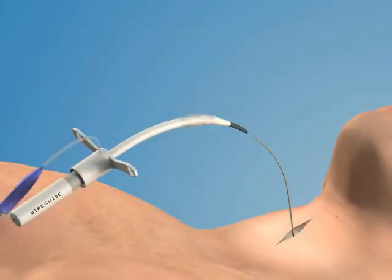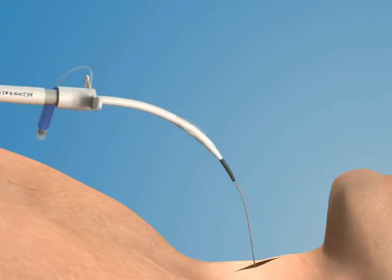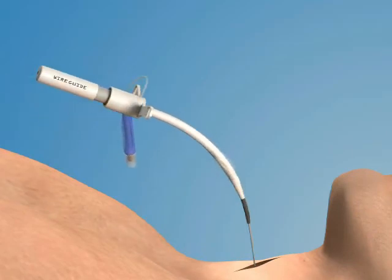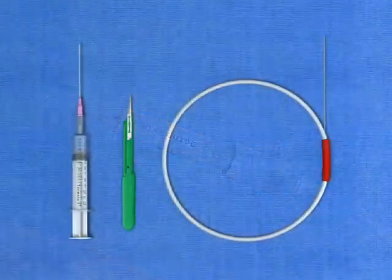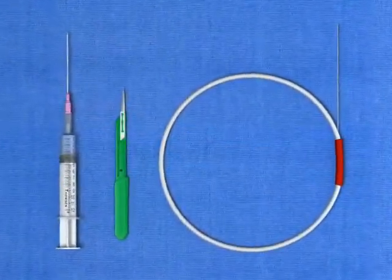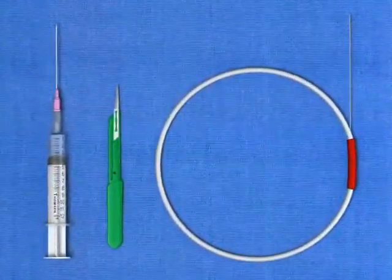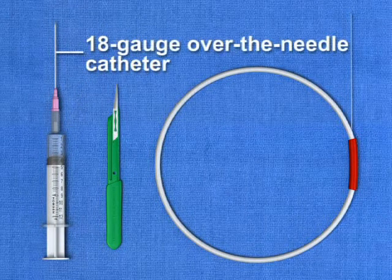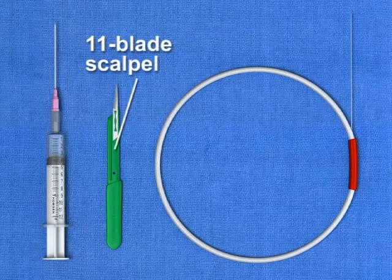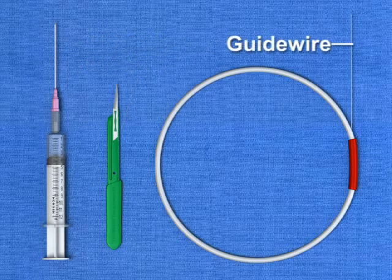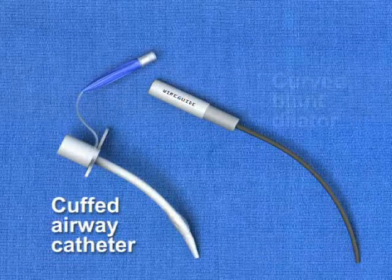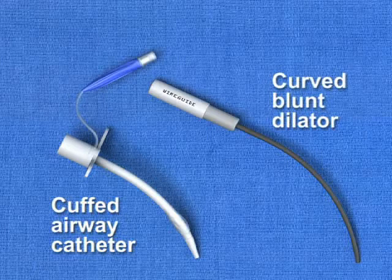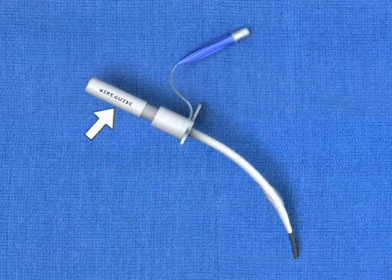The Melker cricothyroidotomy procedure relies on the Seldinger over-the-wire technique to place the airway. The equipment may be found in a commercially available prepackaged kit that includes a 12-milliliter syringe, an 18-gauge over-the-needle catheter, an 11-blade scalpel, a flexible guide wire in a plastic housing, a cuffed airway catheter, and a curved blunt dilator. The dilator must be placed into the airway catheter prior to the procedure.